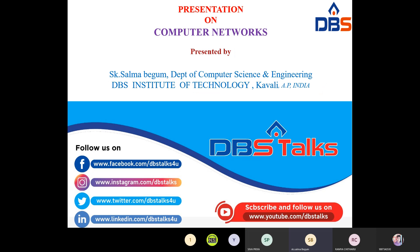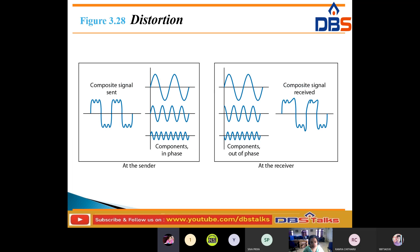In distortion, whatever signals we are using will change their shape or form. We don't have only one shape; we have different shapes. Every shape has its own different frequencies. Each signal component has its own propagation speed. Whenever it travels through the medium, at the final destination the data received becomes delayed, and its arrival time will be delayed. The signal components at the receiver have faced different conditions than at the sender.